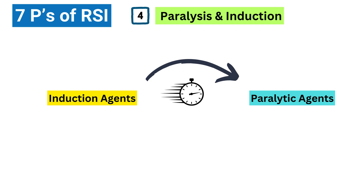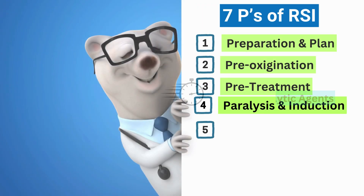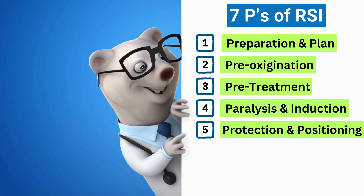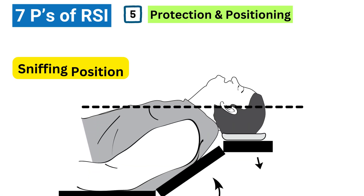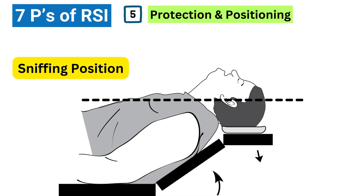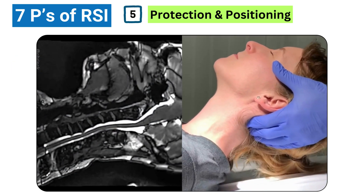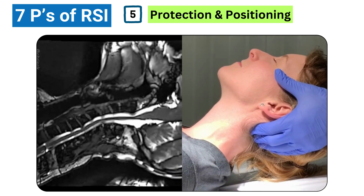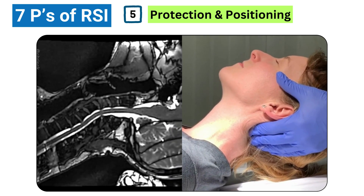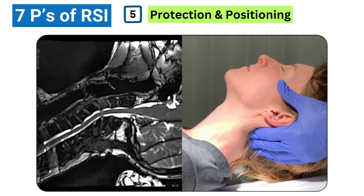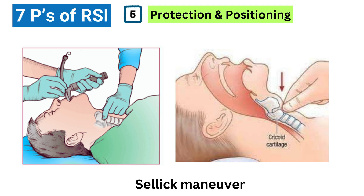After the patient is paralyzed, we move on to protection and positioning. We want to get them in the best position for intubation, which is called the sniffing position — where their head is slightly tilted back and their neck is flexed. This helps us see the vocal cords clearly. We also use to routinely apply pressure to the cricoid cartilage — that's called the Sellick maneuver — to try and prevent stomach contents from going into the lungs. However, there's some debate about how effective that is, so it's not always done anymore.